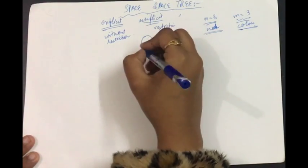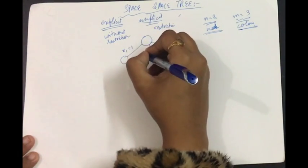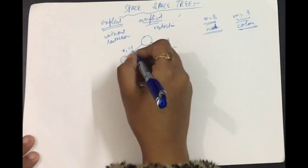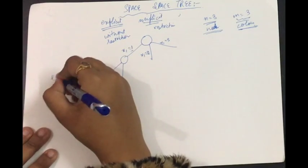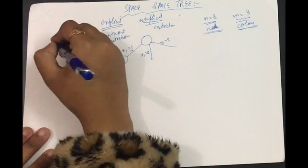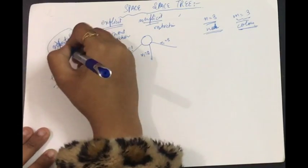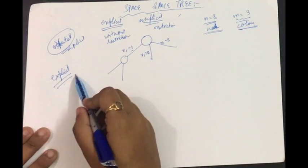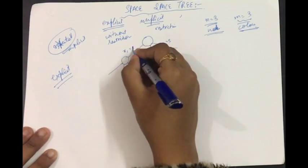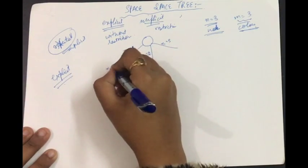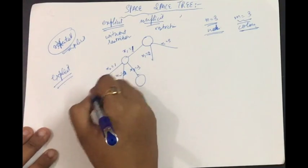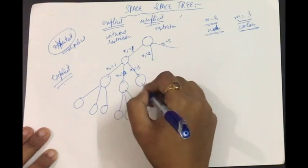We start building the state space tree. With n = 3 nodes and m = 3 colors, node x1 has three options: color 1, color 2, or color 3. In the explicit state space tree — without applying constraints — colors can be repeated. So even if x1 is assigned color 1, an adjacent node x2 could also be assigned color 1. This gives three branches at each level of the tree.